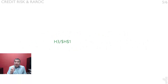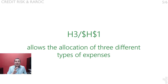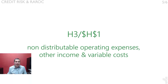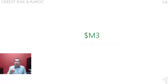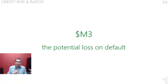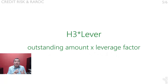H3 over H1 is an allocation factor. It represents the proportion of a certain loan with respect to the total portfolio. It allows the allocation of three different types of expenses directly allocated to any loan: non-distributable operating expenses such as overhead costs, other income, and variable costs. M3 is the potential loss on default that in this model will be treated stochastically as structured before. H3 times lever represents capital — the denominator of RAROC. The outstanding amount of a loan multiplied by its leverage factor yields the capital required by it in order to generate revenues net of expenses and potential losses.